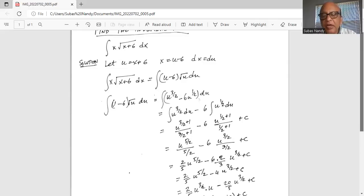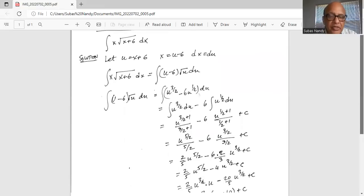3 by 2 distributed to the numerator becomes 2 by 3 multiplied by 6 u 3 by 2 plus c. c is the integration constant.